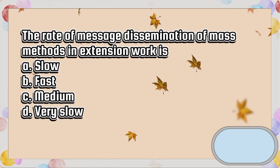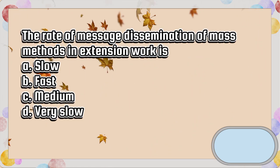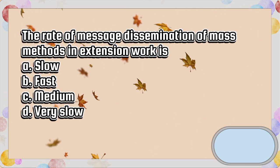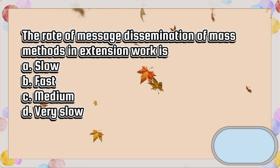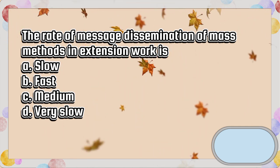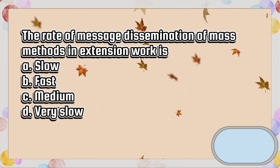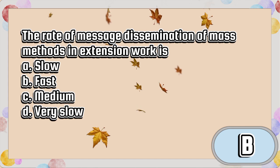The rate of message dissemination of mass methods in extension work is: A. Slow. B. Fast. C. Medium. D. Very slow. The answer is letter B.